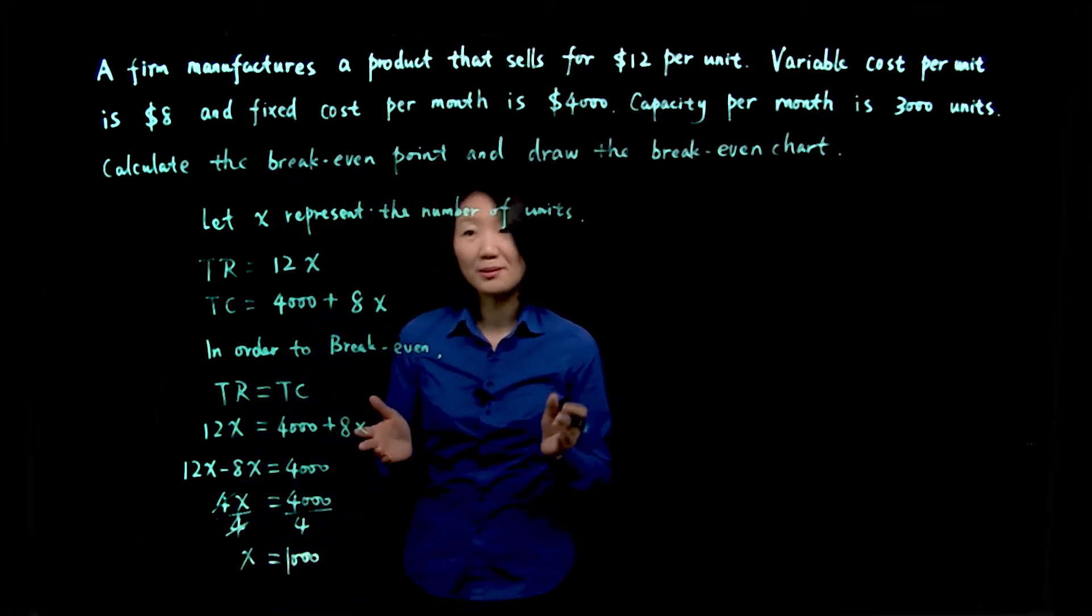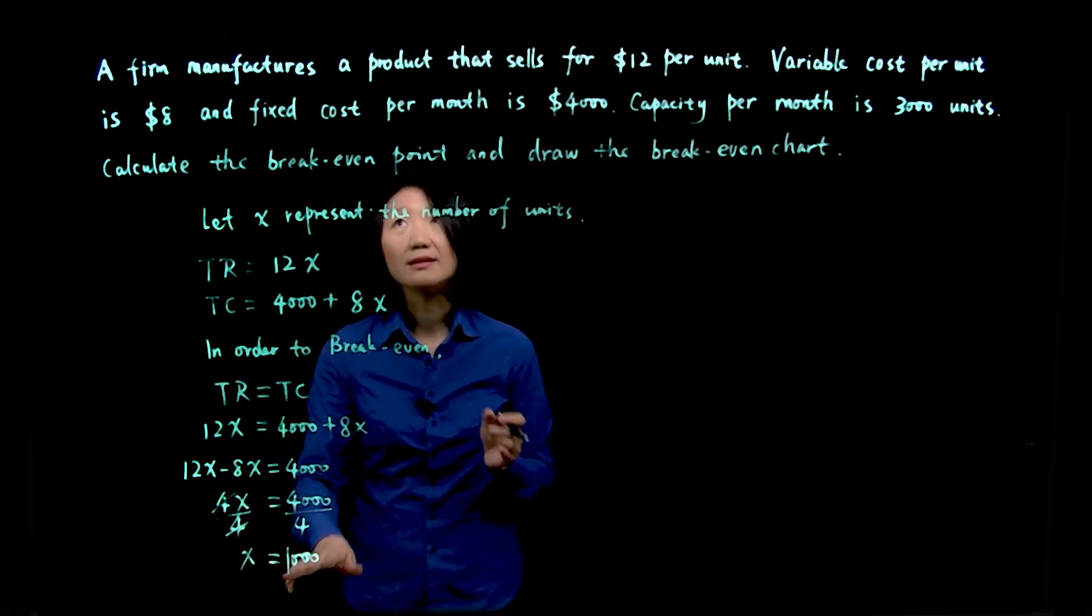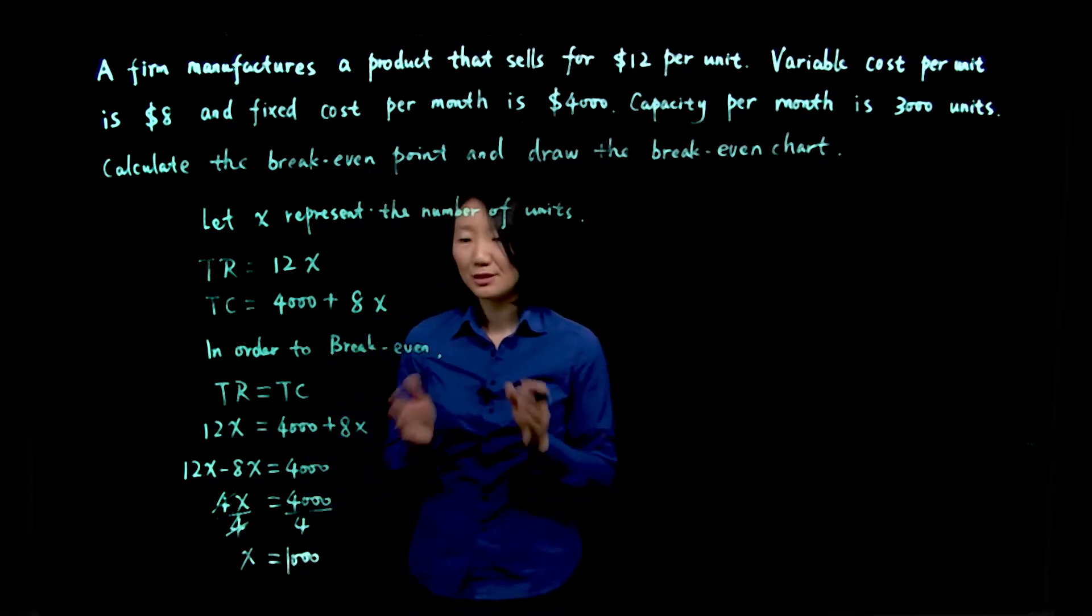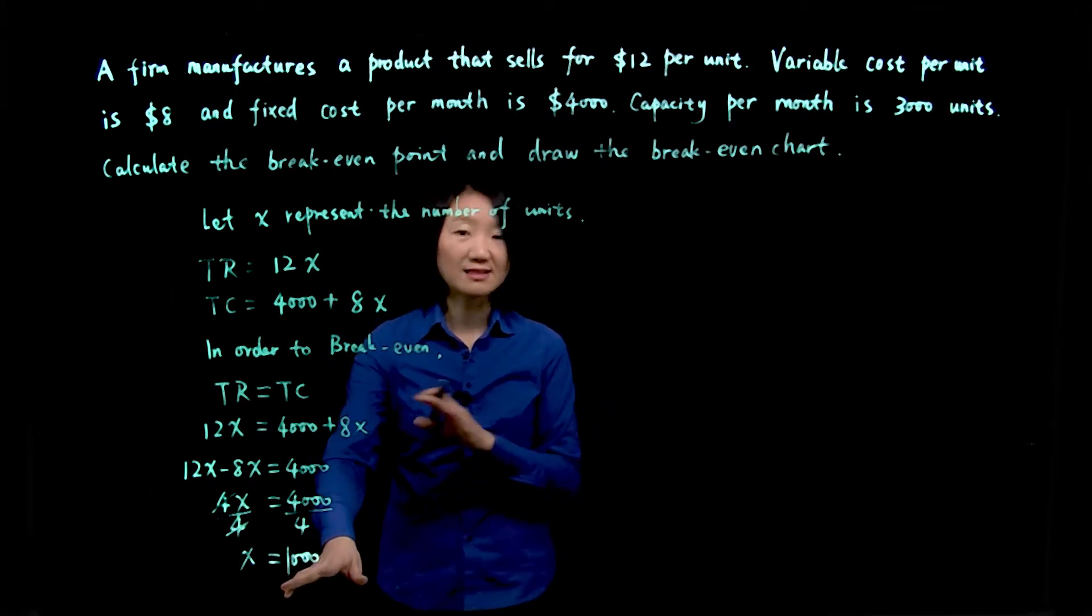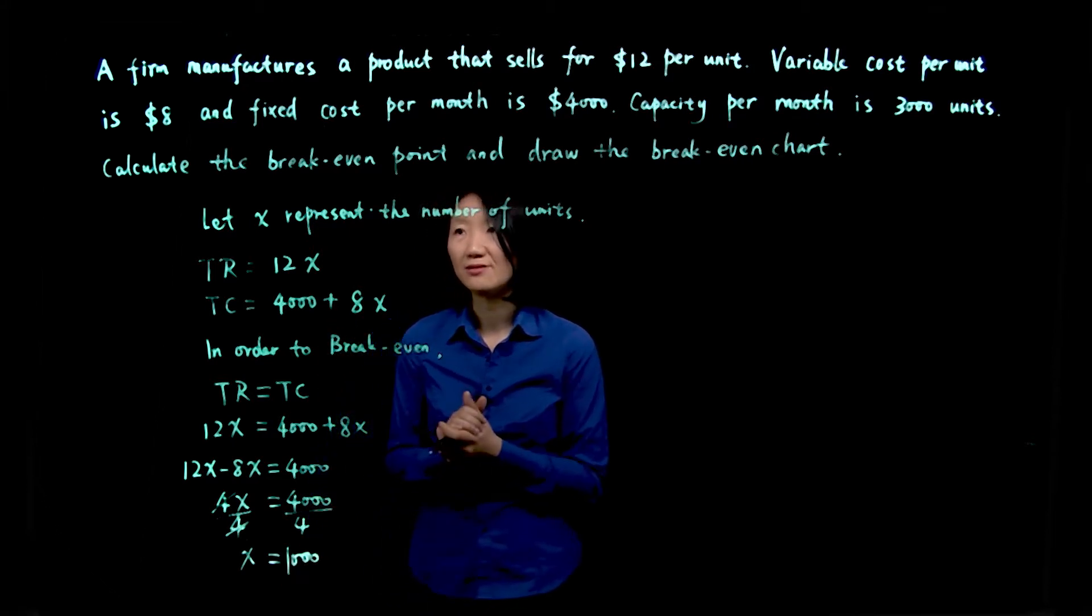So now we know our break-even point is 1,000. If the firm produces 1,000 units and sells 1,000 units, they can break-even.